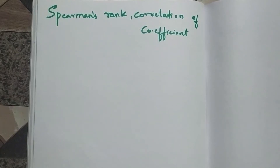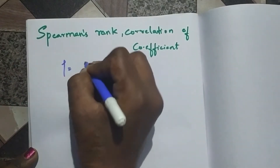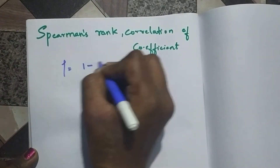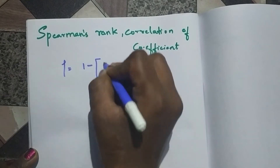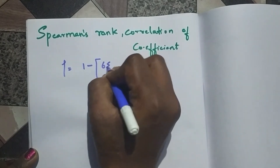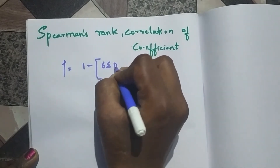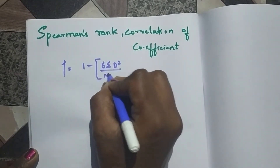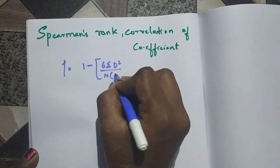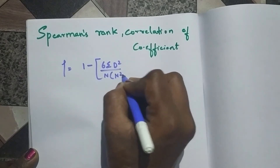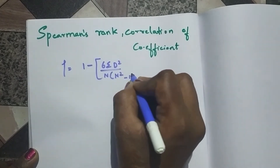Hello guys. In this video we will be learning about Spearman's rank correlation coefficient. The formula for this is 1 minus 6 times summation d² divided by n times (n² minus 1).